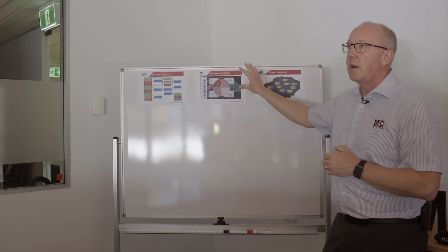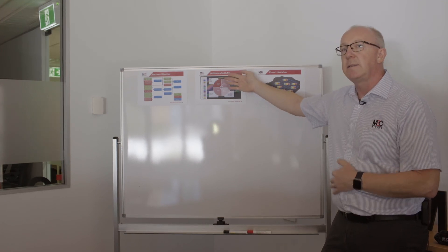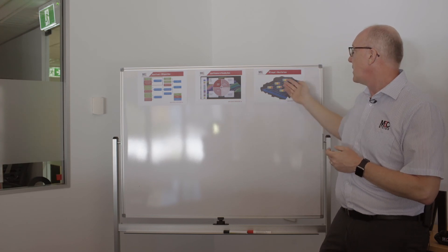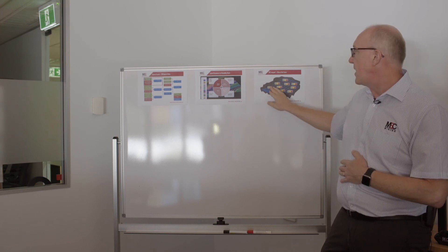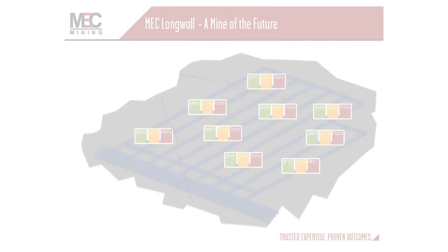The process takes weightings and rankings from this mineability matrix, and essentially over the mine plan you can estimate the influence of mineability on the production rates, such that at any one time in the mine plan sequence the production rates and outputs can be more confidently predicted and forecasted. Thank you.